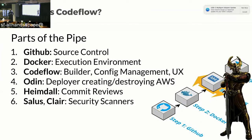Here are the parts of the pipeline I'm going to talk about today. GitHub is our main source control on a GitHub Enterprise account. Docker is used as the execution environment and configuration management for applications — not as a security mechanism, because there's a CVE breaking out of Docker containers every other day. Codeflow is the builder, config management, and user interface. Odin is the actual deployer, creating and deleting AWS resources. Heimdall is the part of the system that reviews commits. And Salus and Claire are security scanners that scan every commit that goes through.